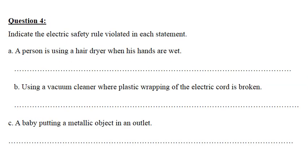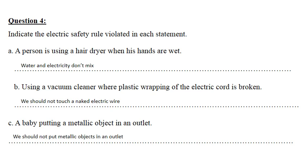Question four: identify the electric safety rule violated in each statement. A — a person uses a hair dryer with wet hands: we should not use any electric appliance near water. B — using a vacuum cleaner with broken plastic wrapping on the cord: we should not touch a naked electric wire as we can get electrocuted. C — a baby putting a metallic object in an outlet: no one should put metallic objects in an outlet.